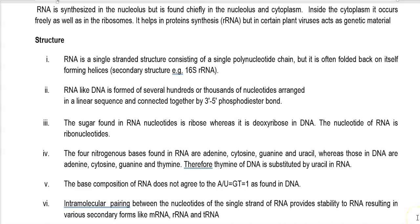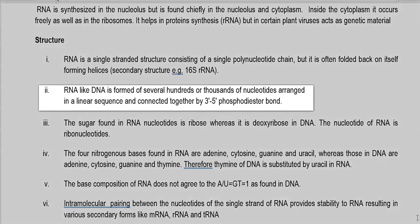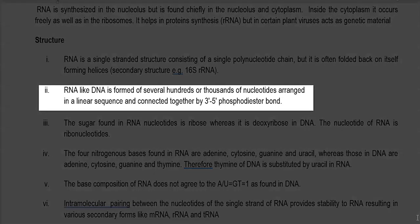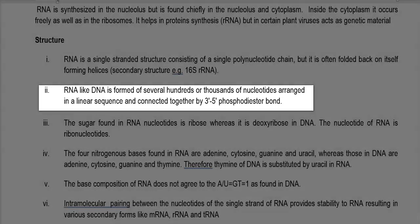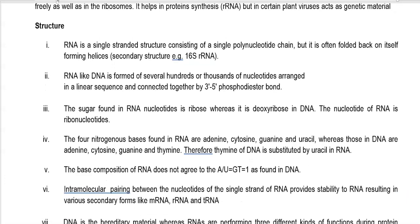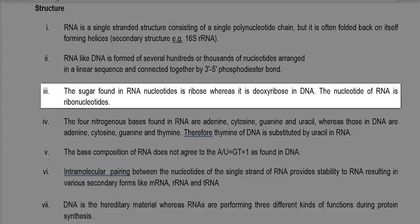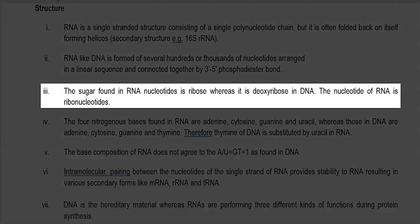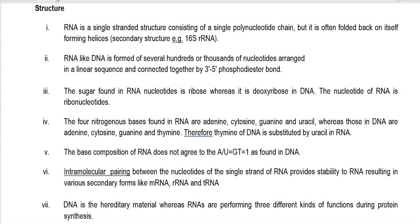RNA, like DNA, is formed of several hundred or thousands of nucleotides arranged in a linear sequence and connected together by 3' to 5' phosphodiester bonds — the same as in the DNA molecule. The sugar found in the RNA nucleotide is ribose, whereas it is deoxyribose in DNA.